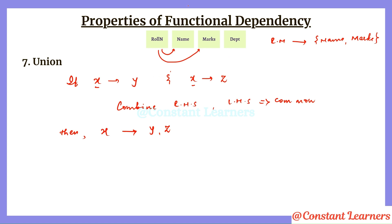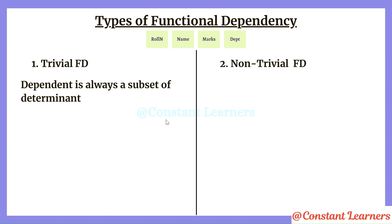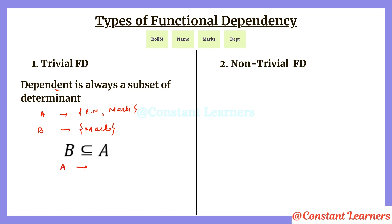Now let's discuss the types of functional dependency. The first type is trivial functional dependency, which is the same as reflexivity. The dependent is always a subset of the determinant. For example, if A is roll number and marks, and B is marks, then B is a subset of A. This functional dependency will always be valid, and this type is known as trivial functional dependency.